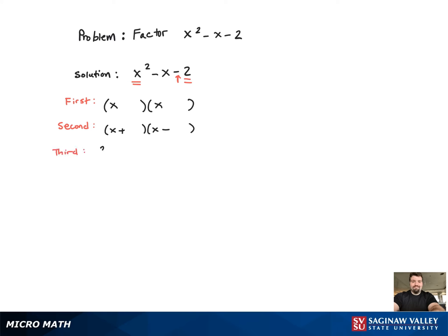Next, I'm going to focus on my constant term. Since it's 2, that only has one pair of factors, 2 and 1. So that gives me exactly two possibilities here.